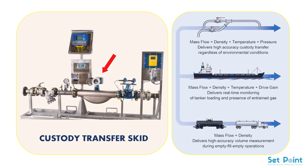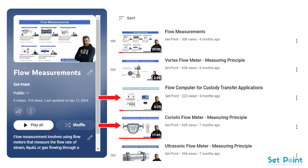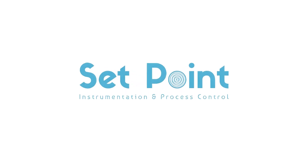Some advantages of having a mass flow meter are that they have high accuracy and low maintenance due to the lack of moving parts. You might also be interested in the following tutorial videos, so I left the link of each one in the description box below. Thank you so much for watching and have a nice day.